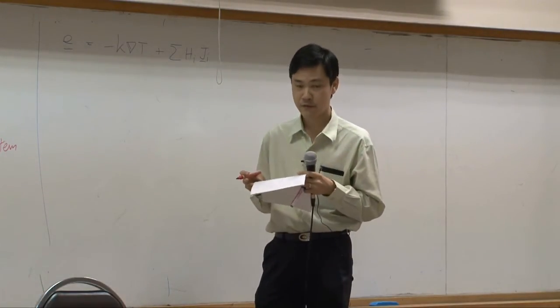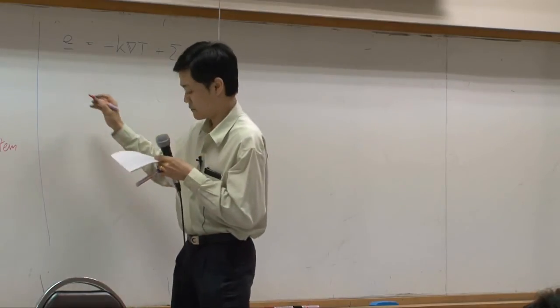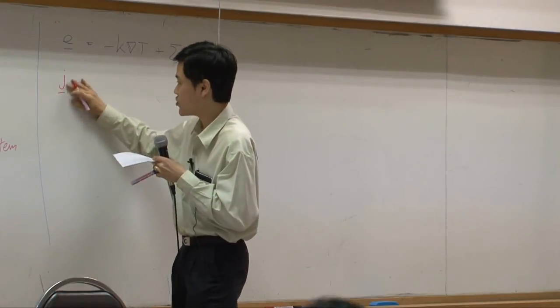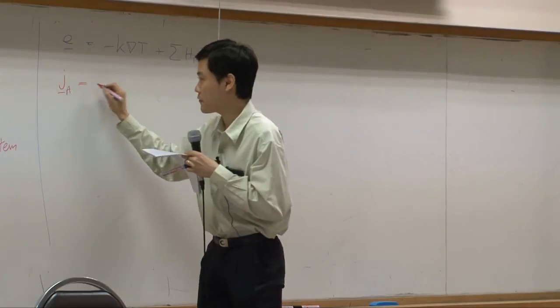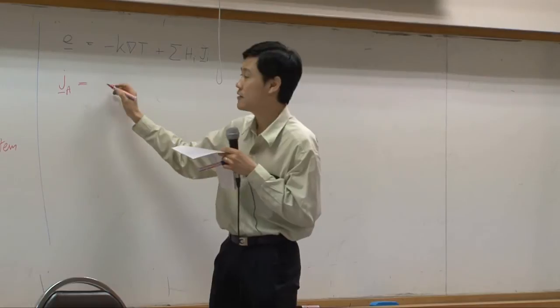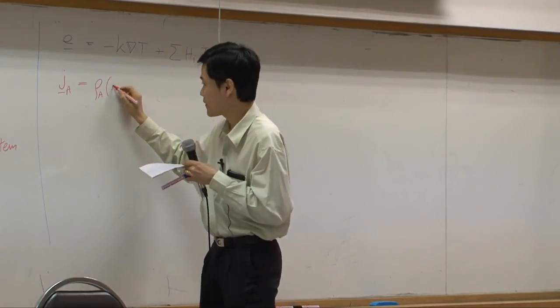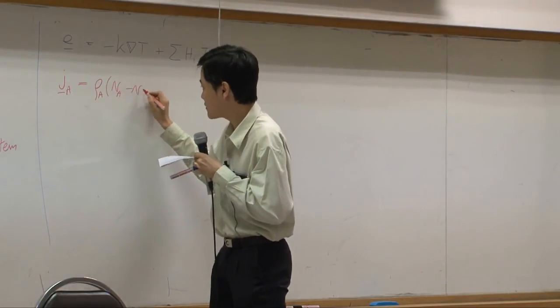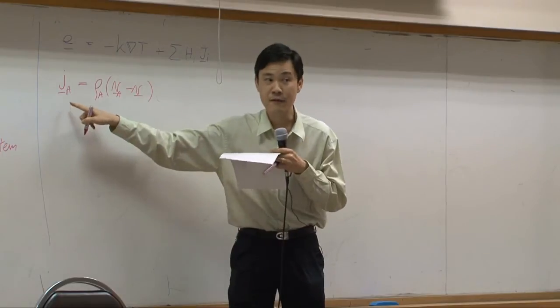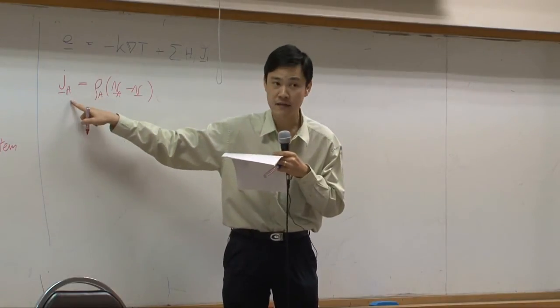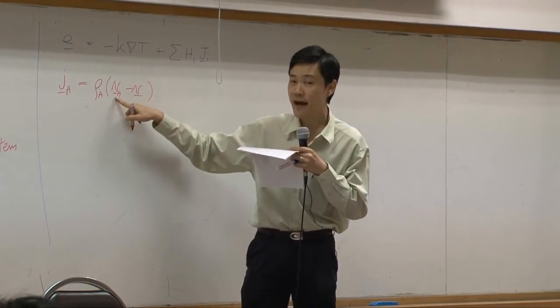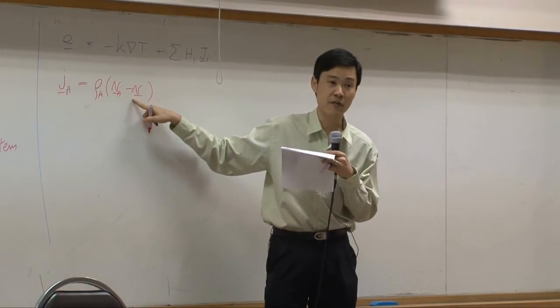Earlier we have j_i, the small j. According to theory, j_A, the small j here, would equal to rho_A times V_A minus V, right? This is diffusion flux, diffusion mass flux of A. It depends on concentration of A and relative velocity, how much faster A moves compared to average velocity of the mixture. This is mass flux.